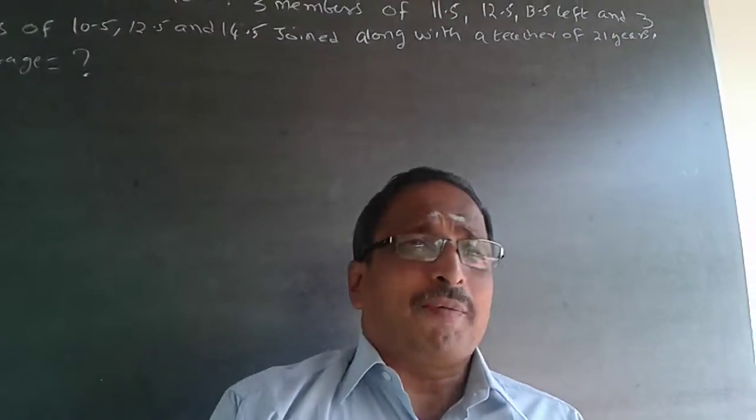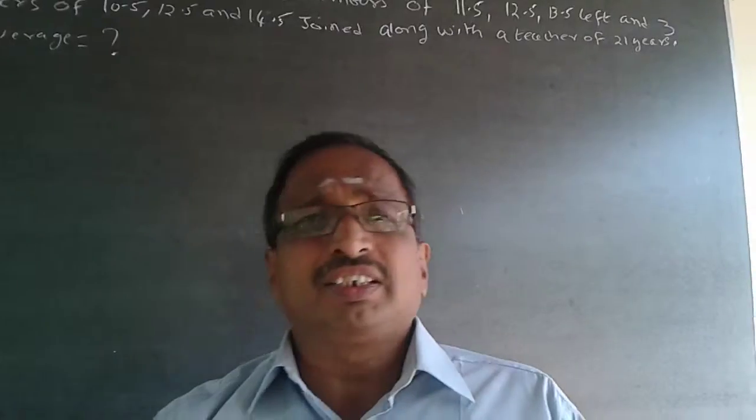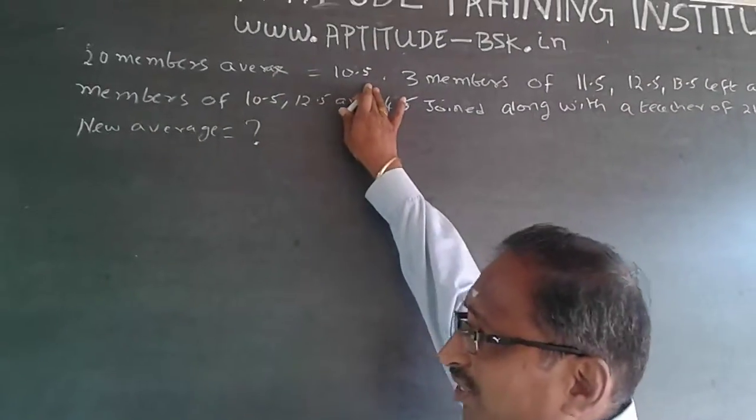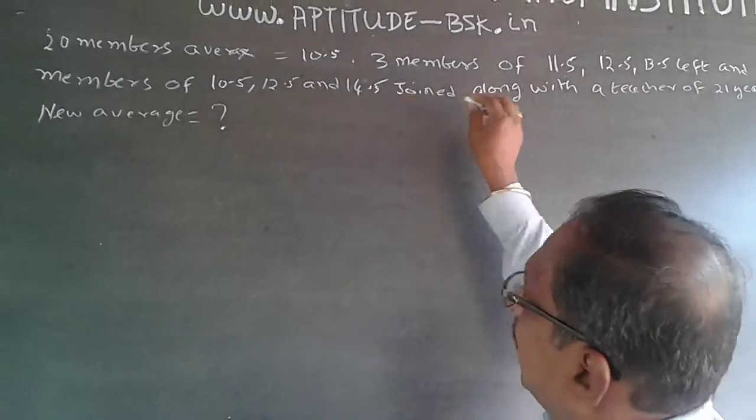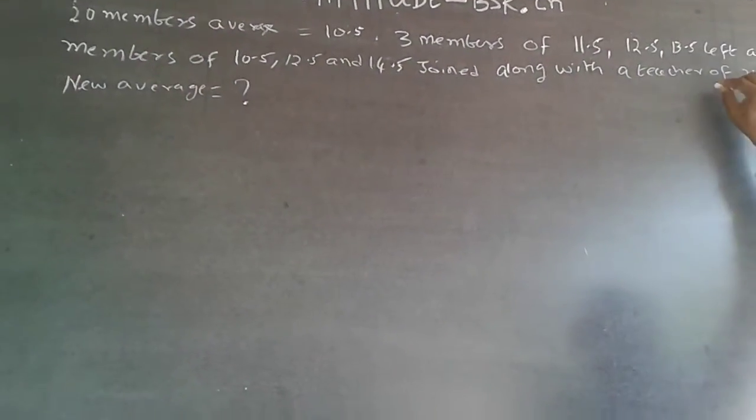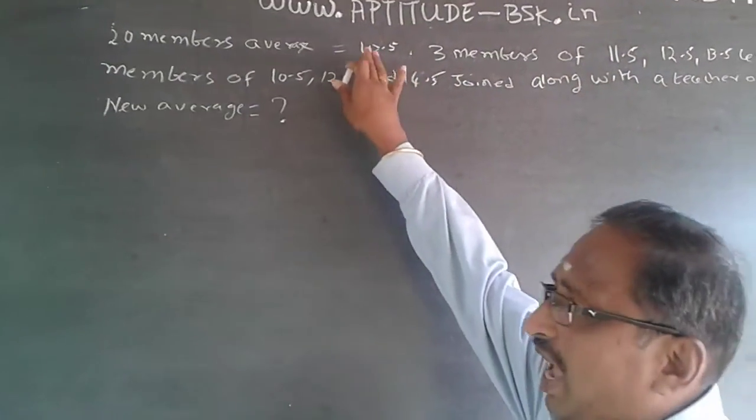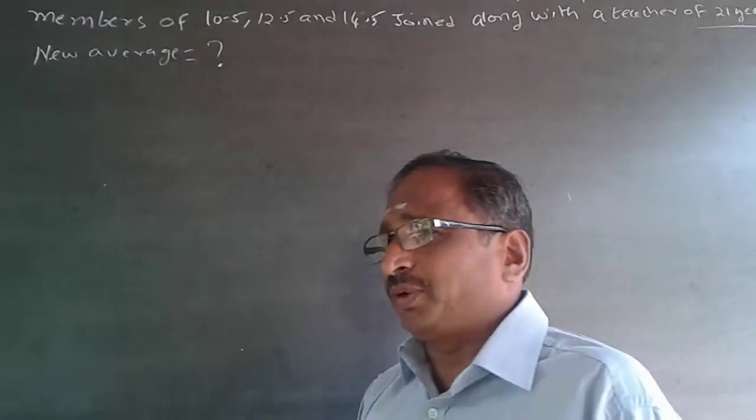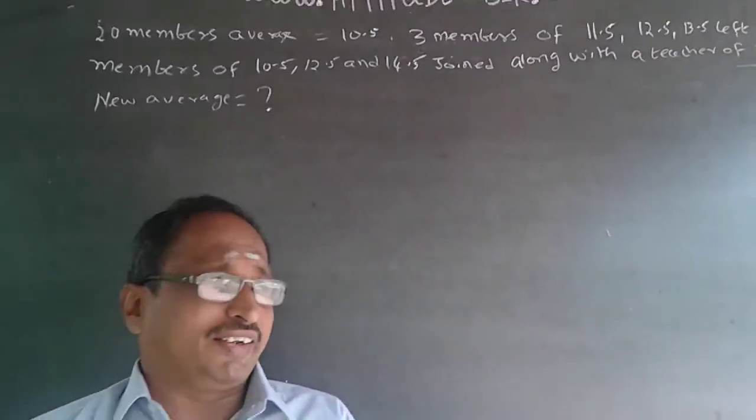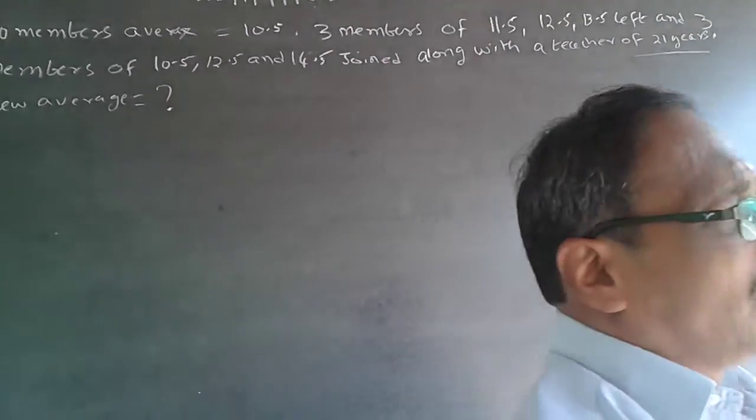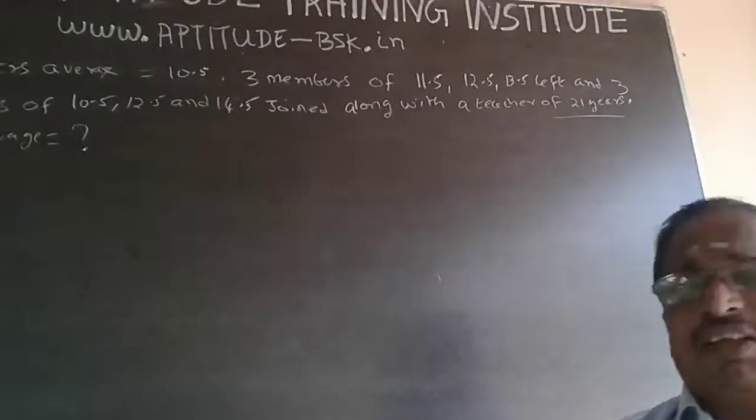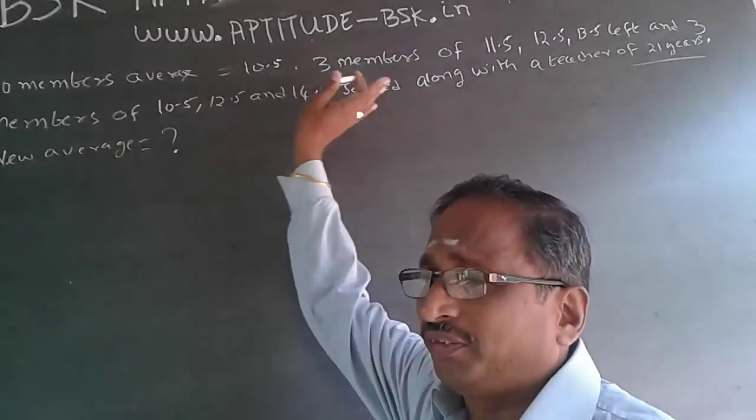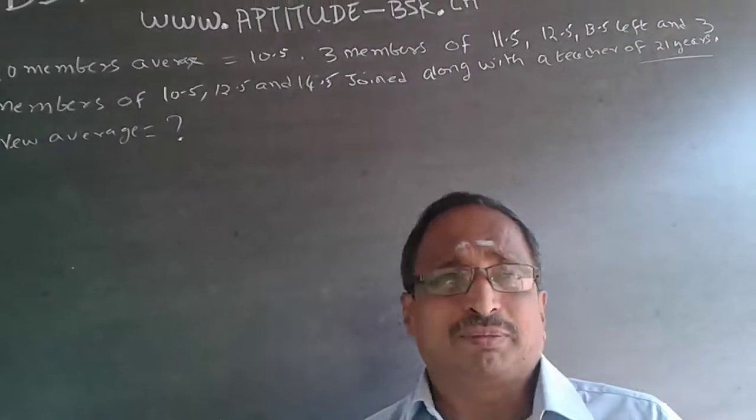So this is a quantitative problem on averages, a simple problem. Here, the average of what is not given. Only here it is mentioned as age. So let me presume that this is the average age of the students there. It is the average of age, and 21 years is given for the teacher. So this is the average age of the people assembled there.